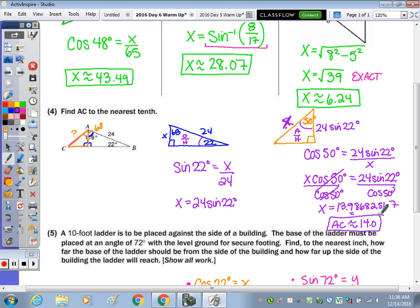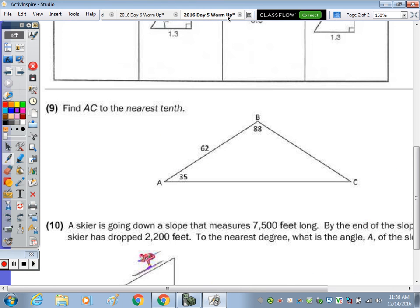Now I'm going to go back to the extra credit that we had in the day five warm-up, which is number 9, because it's a similar process. We want to find AC, so we draw the altitude to give us two right triangles. I'm going to call this x, this y, because length AC would be equal to x plus y.